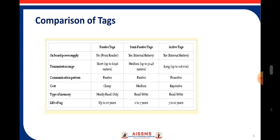Here you can see a comparison of the tag types: passive, semi-passive, and active. Onboard power supply — passive: no; semi-passive: no; active: yes. Communication pattern — passive and semi-passive are passive; active is proactive. Cost — passive tags are cheap; semi-passive are medium; active tags are expensive. Memory type — passive tags are mostly read-only; semi-passive and active are read and write. Lifespan — passive tags can last up to 20 years, while semi-passive and active tags are battery-dependent.